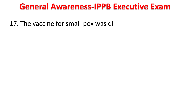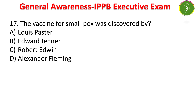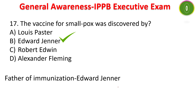Next question: the vaccine for smallpox was discovered by whom — Louis Pasteur, Edward Jenner, Robert, or Alexander Fleming? The answer is Edward Jenner. Edward Jenner is called the father of immunization. Alexander Fleming invented penicillin.